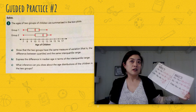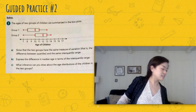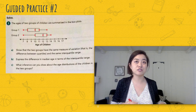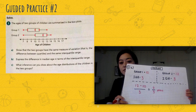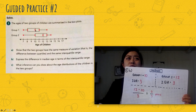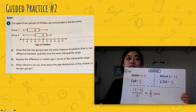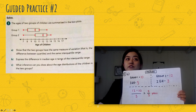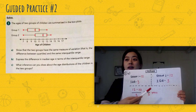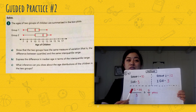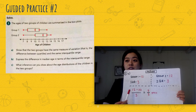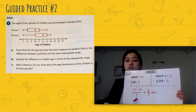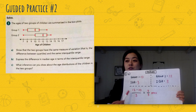For part B, express the difference in median age in terms of the interquartile range. Group 1's median is 10, Group 2's median is 12, and the interquartile range we already found is 3. So the difference in medians is 12 minus 10, which is 2, divided by 3, giving us two-thirds. The difference in median age is two-thirds of the interquartile range.